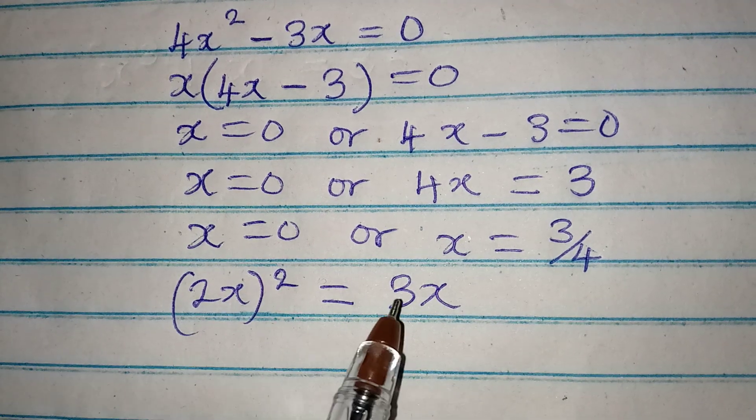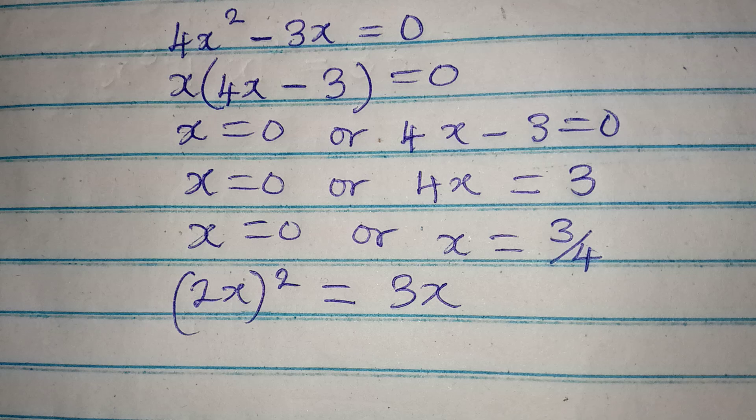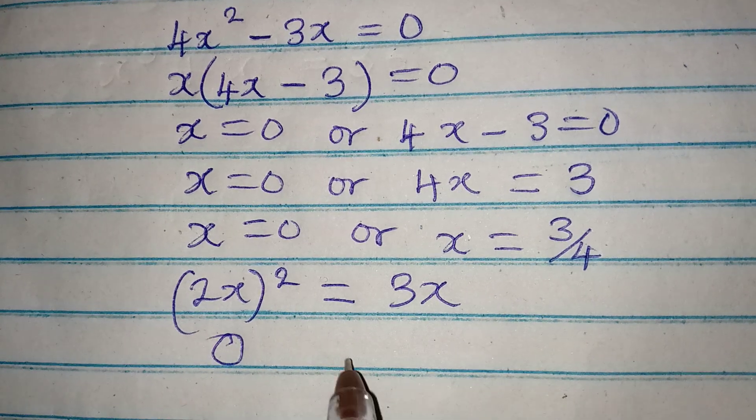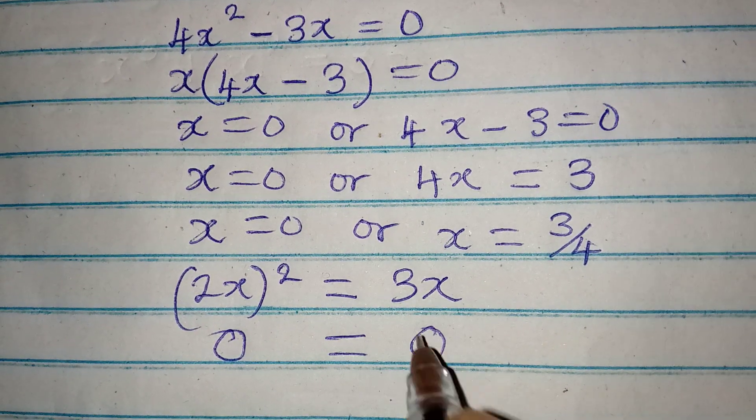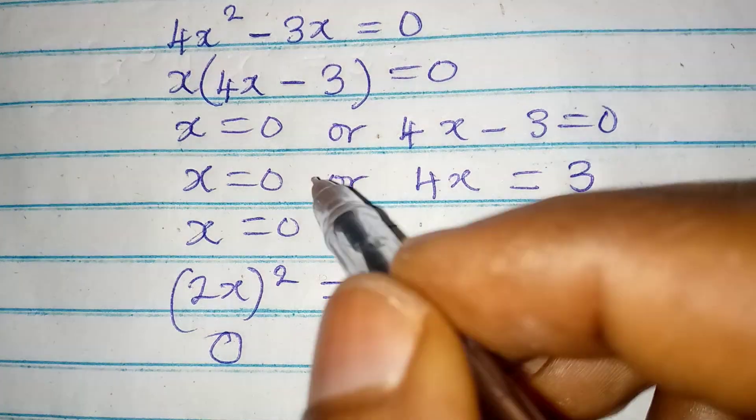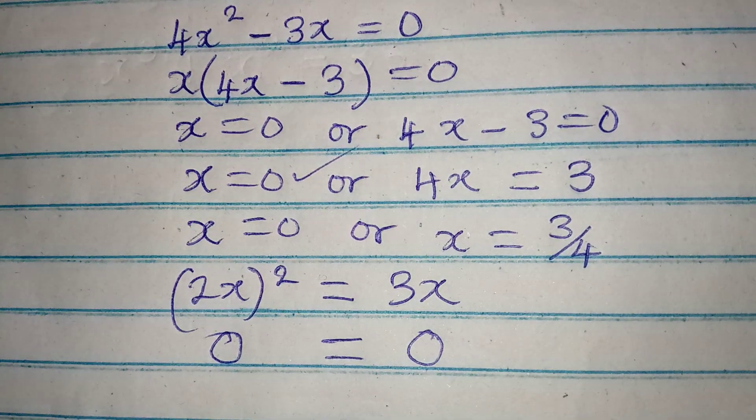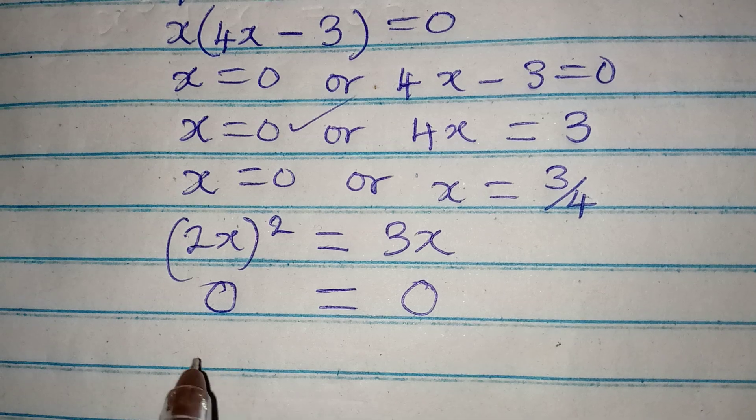So if we put 0 as the value of x it will be satisfying, because everything here will be 0 and everything on the right will be 0, so 0 is satisfying. Then if we put 3 over 4, that means we'll be having...